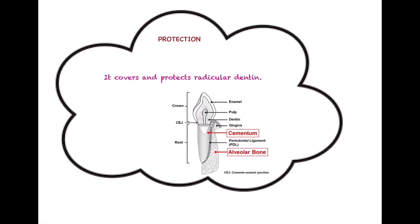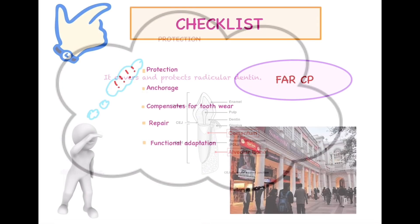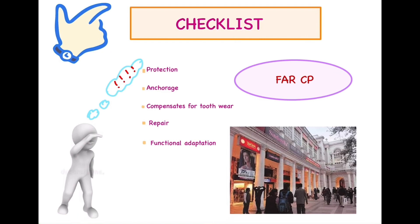So let's have a quick recap and look at our checklist of what we have learned today. We learned the definition of cementum — it is an avascular mesenchymal tissue which covers the anatomical part of the root. Then we learned about the five important functions of cementum.